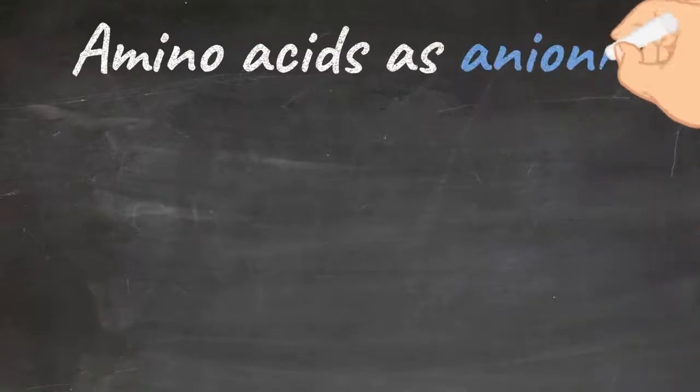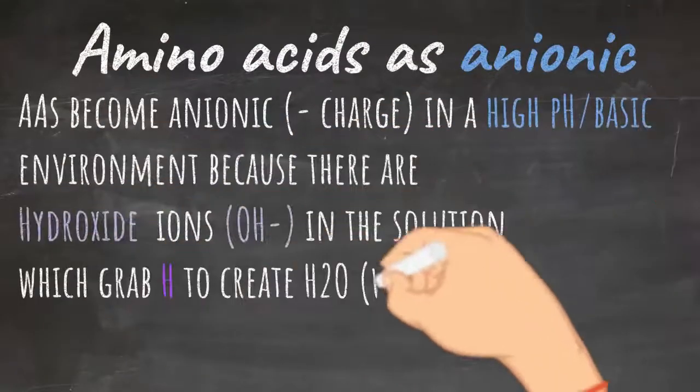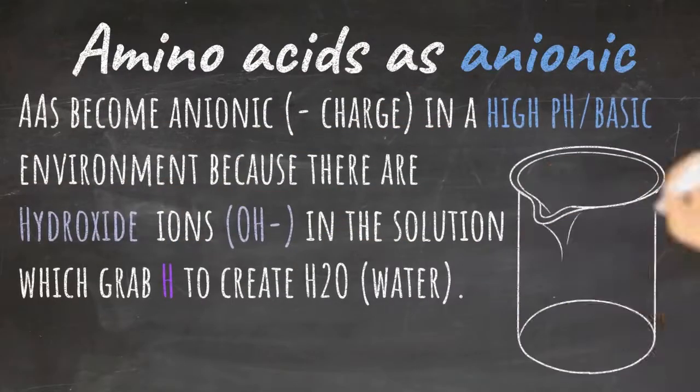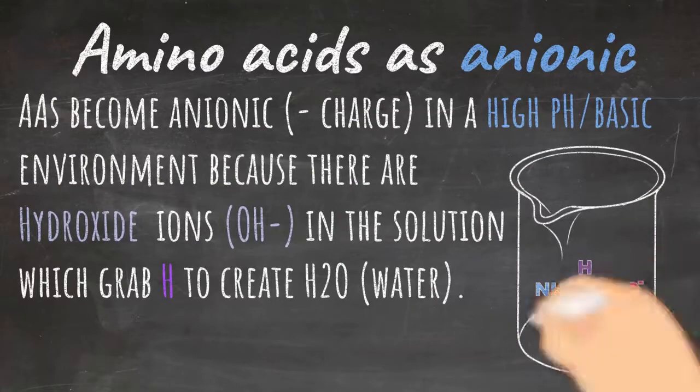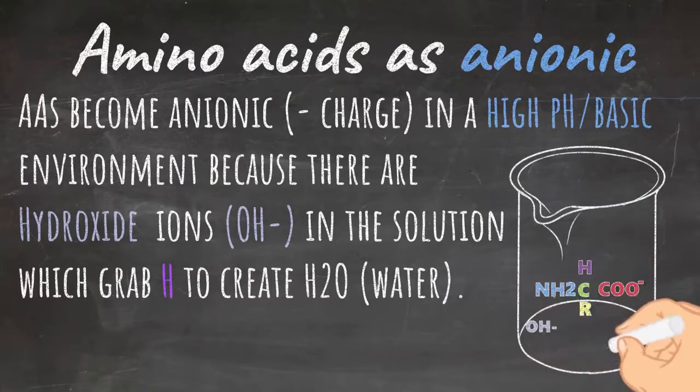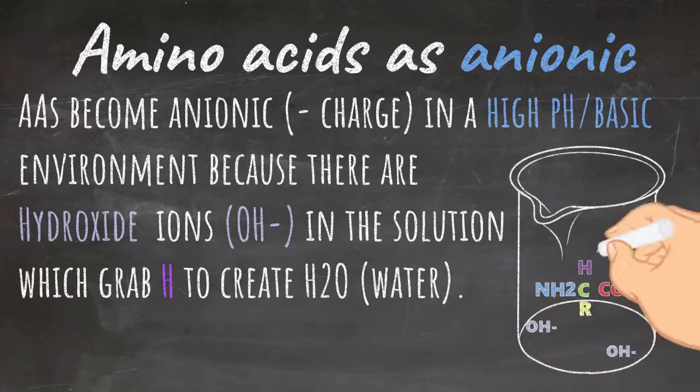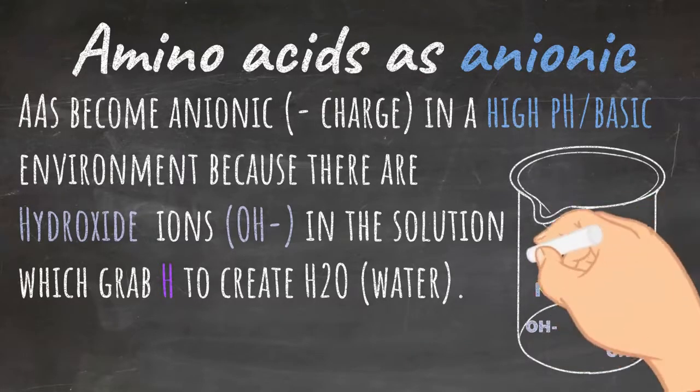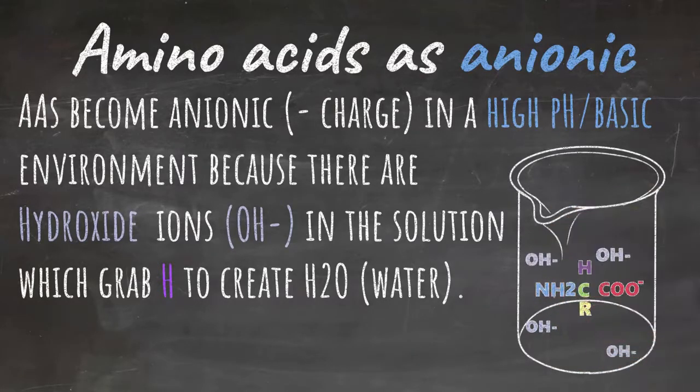Amino acids as anionic. Amino acids become anionic or gain a negative charge in a high pH or basic environment because there are hydroxide ions, OH with negative charge, in the solution. These grab onto the hydrogens in the amino acid to create water in the solution.